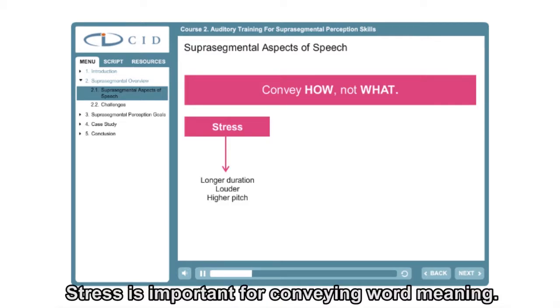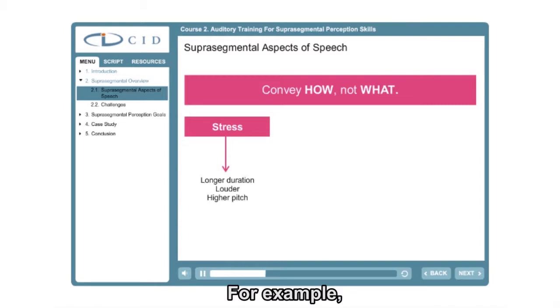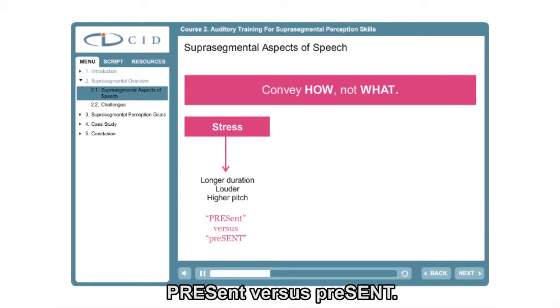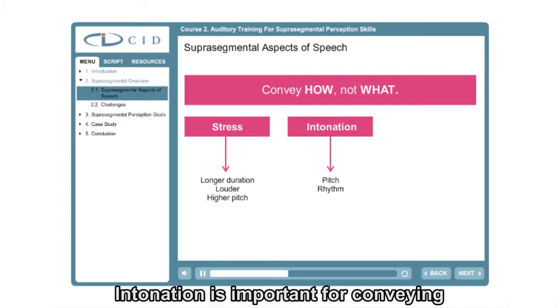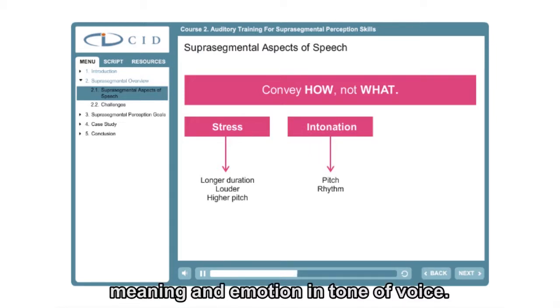Stress is important for conveying word meaning. For example, present versus present. Intonation is important for conveying meaning and emotion and tone of voice.